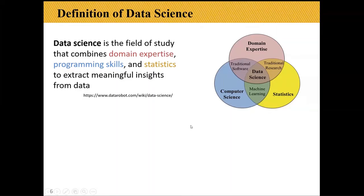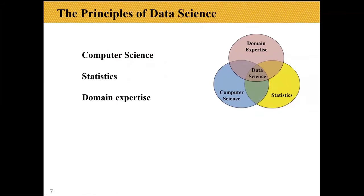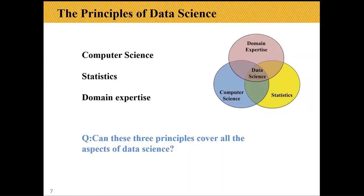The popular and famous data science Venn diagram lists three key principles of data science: computer science, statistics, and domain expertise. The question here is: can these three principles cover all the aspects of data science?